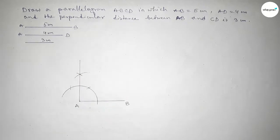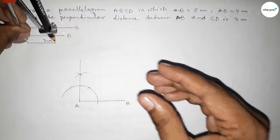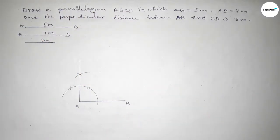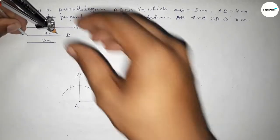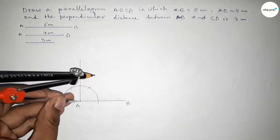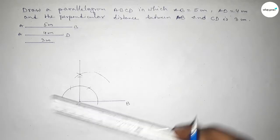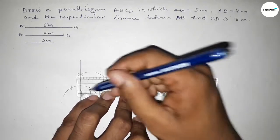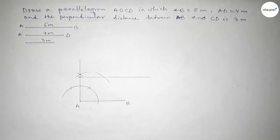Now taking the length 3 centimeter using the compass, putting the compass on point A and cutting here. Next taking the length 4 centimeter using the compass, putting the compass here and drawing an arc. Now drawing a line this way — again this way — and this is perpendicular. Then drawing a line parallel to the AB line.